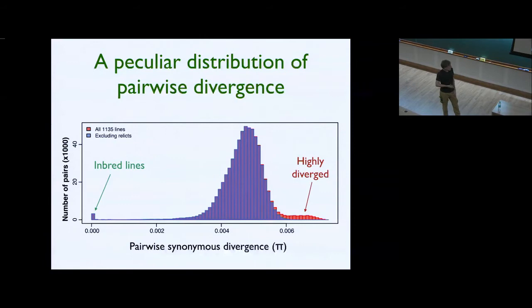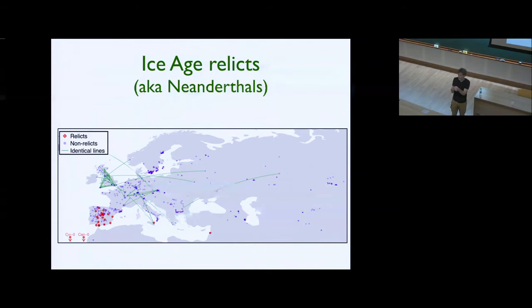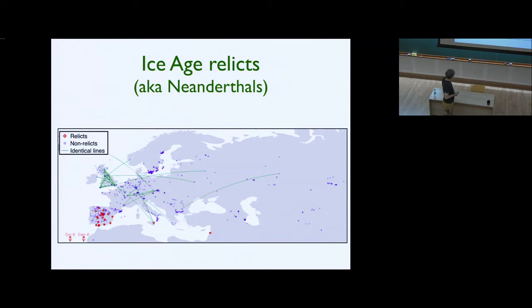On the other end we have a bunch of things that are highly diverged. Here is a map of Eurasia — each dot is a sample accession and the green lines connect things that are identical. I have excluded ones sampled within 500 meters. You do find some long-distance identical pairs once in a while. For instance, something from Bulgaria that is supposedly identical to something near the Ural Mountains, and something from England supposedly identical to something in Russia. Most of those we're pretty sure are just contaminants — people swapping seeds in the greenhouse.